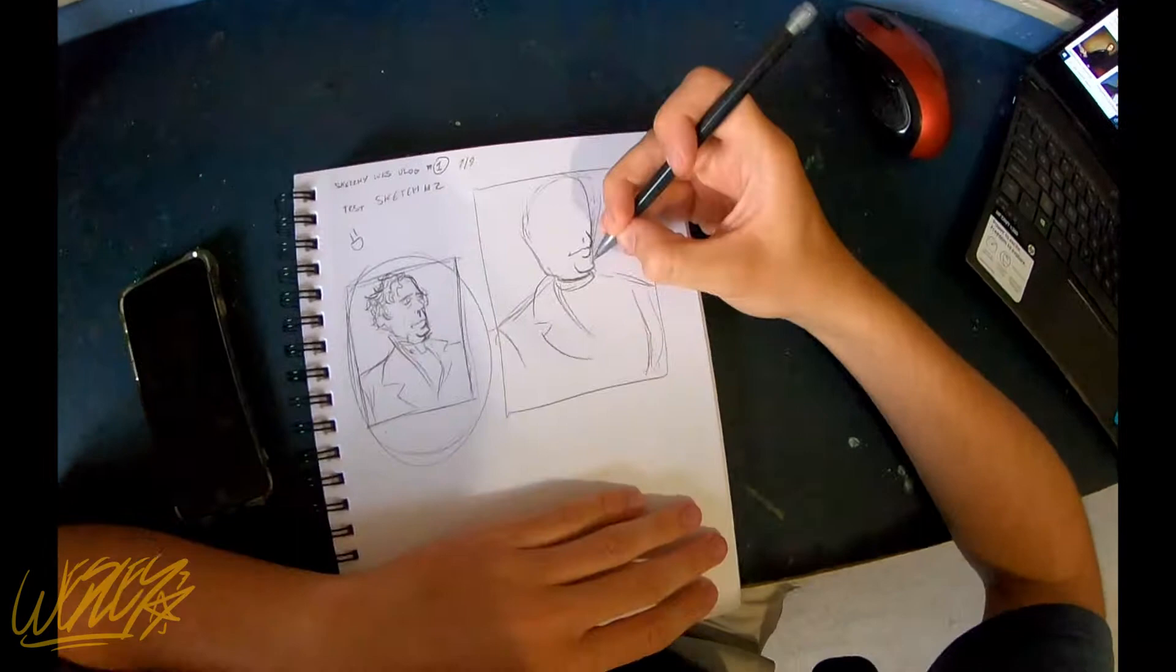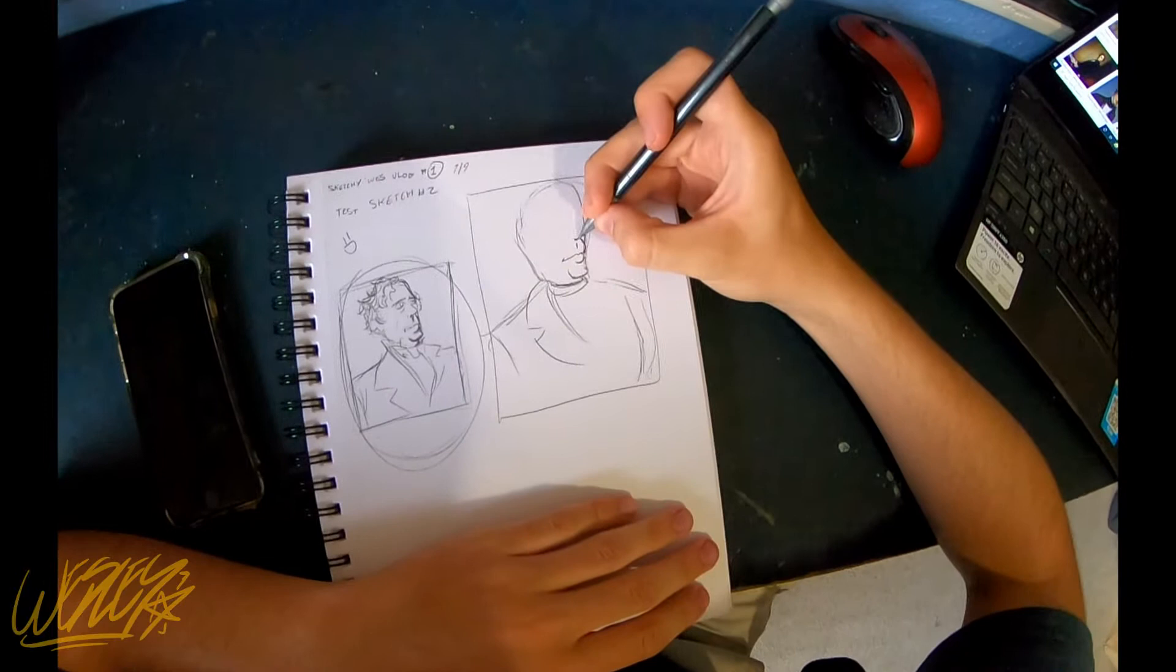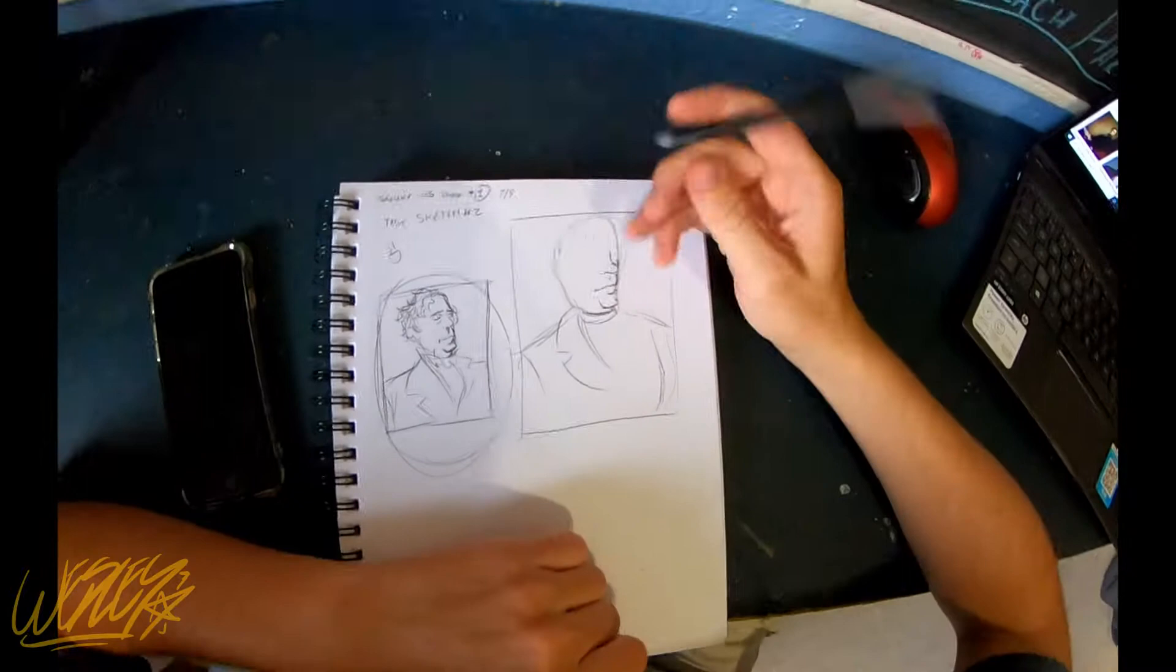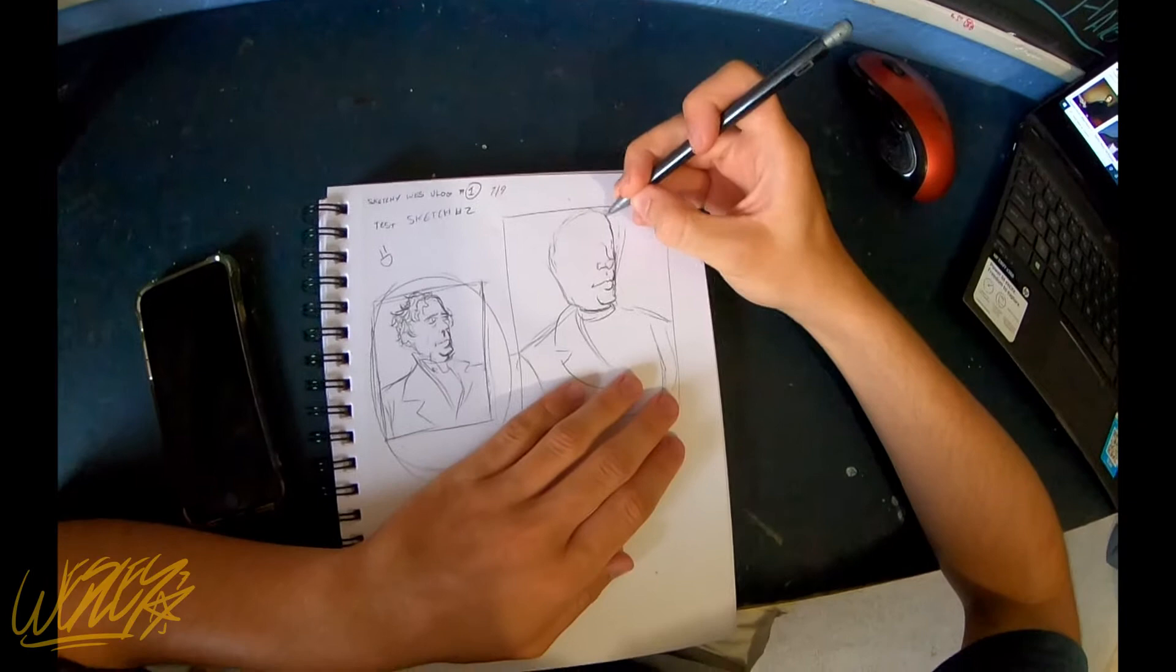What's always difficult with these sort of caricature-ish sketches is trying to figure out what you can exaggerate and make it still look like the person you're drawing. I'm really struggling with this nose. He's got kind of a sharp nose, doesn't he? Hang on. There you go.